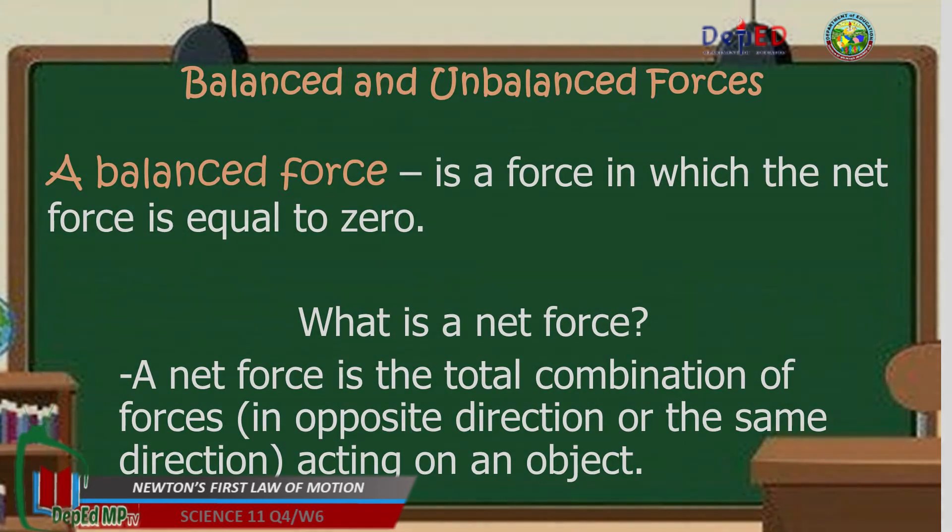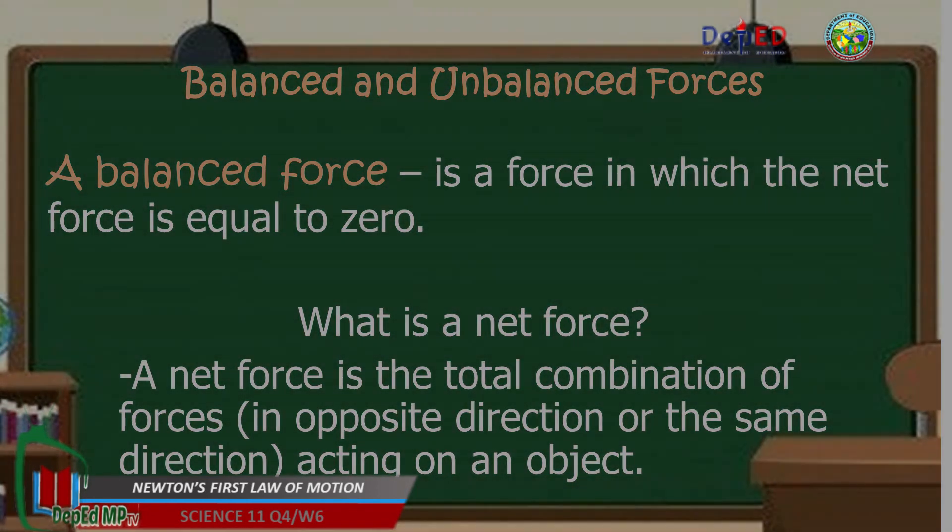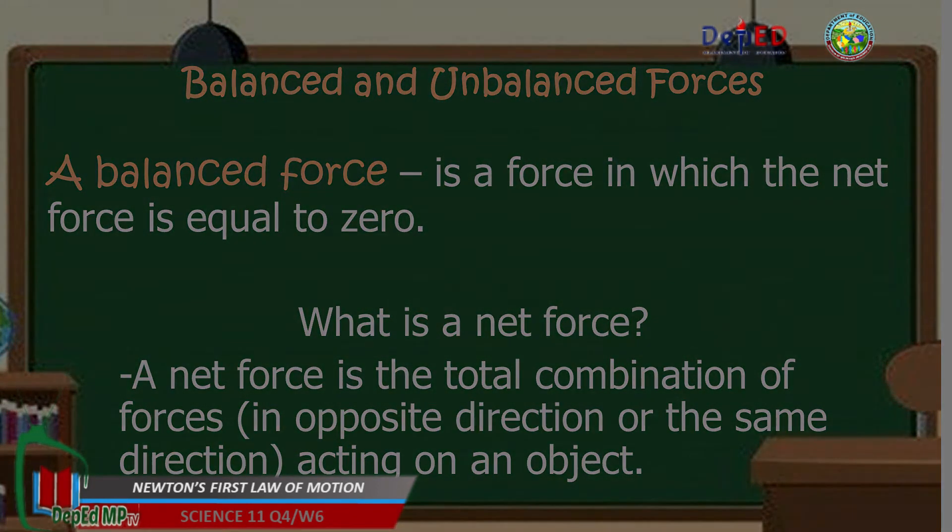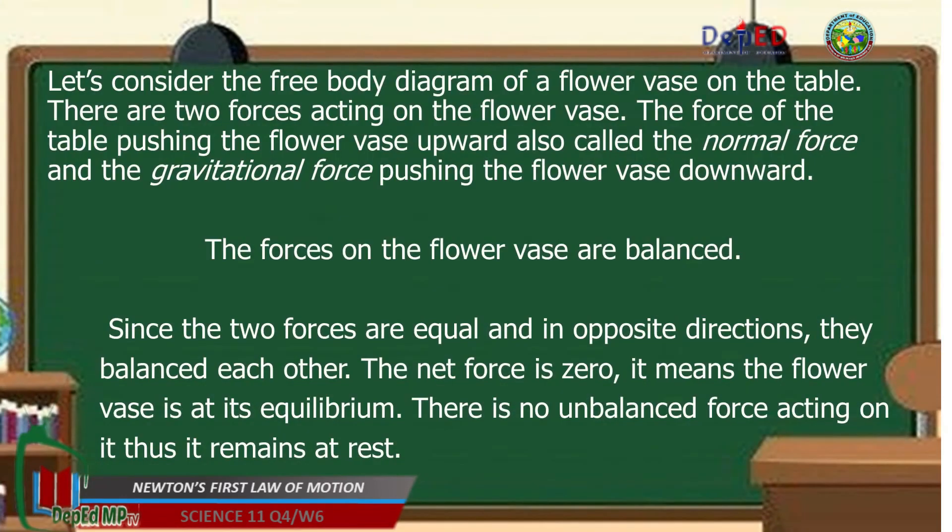A balanced force is a force in which the net force is equal to zero. What is a net force? A net force is the total combination of forces in opposite direction or the same direction acting on an object. Let's consider the free body diagram of a flower vase on the table. There are two forces acting on the flower vase. The force of the table pushing the flower vase upward, also called the normal force, and the gravitational force pushing the flower vase downward. The forces on the flower vase are balanced. Since the two forces are equal and in opposite directions, they balance each other. The net force is zero. It means the flower vase is at its equilibrium. There is no unbalanced force acting on it, thus it remains at rest.